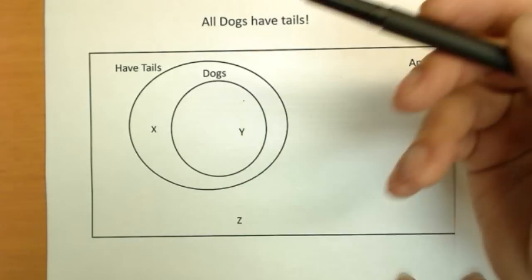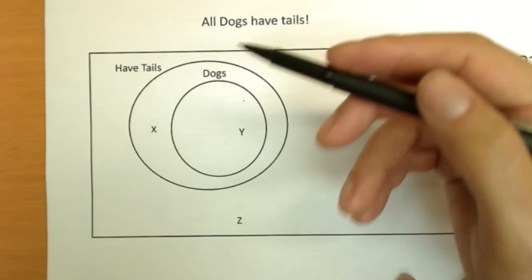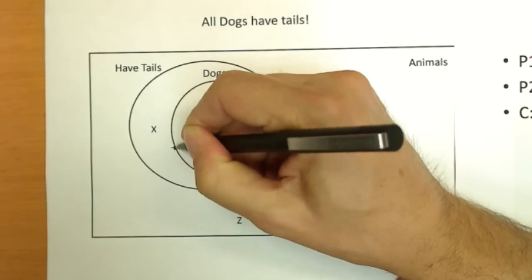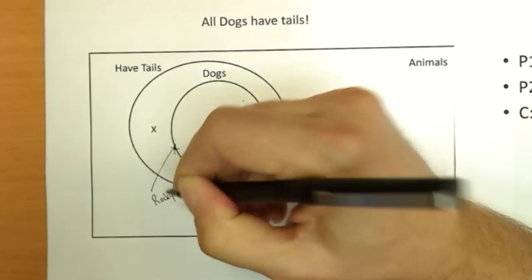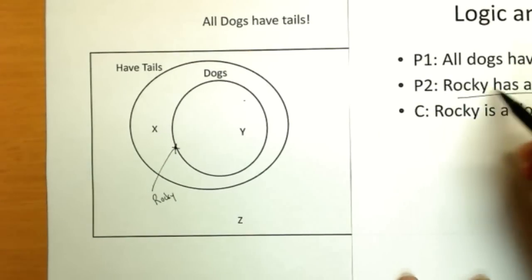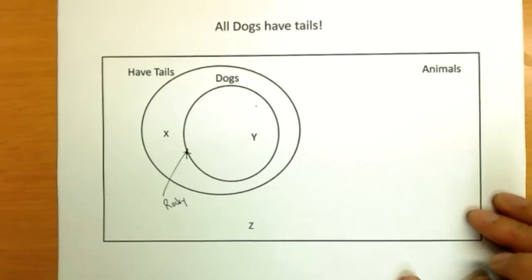He could be a dog, but he could be a cat with an unusual name or a hamster or anything else you might name Rocky. Plenty of other animals have tails. So I'm going to put a spot here for Rocky. Because given the information we know, dogs have tails and he has a tail. He shares a characteristic with dogs, but that doesn't prove he's a dog. So he could be a dog, but we certainly can't conclude he's a dog.